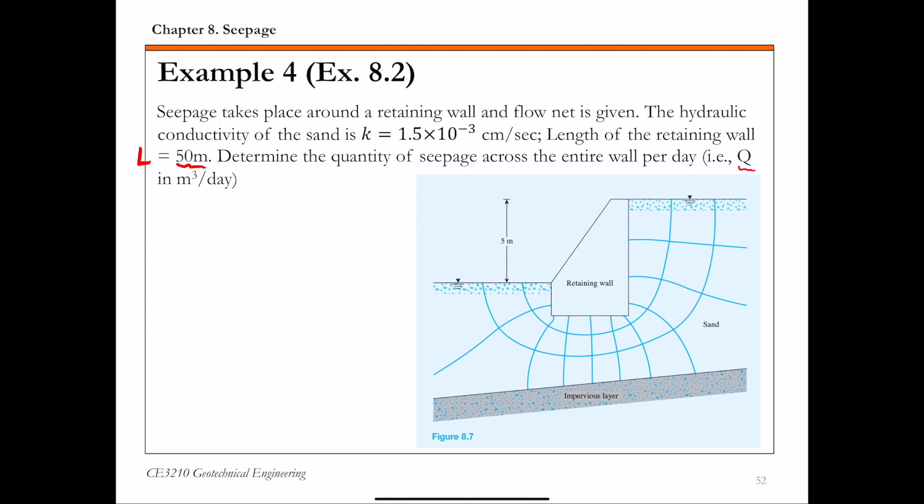In this example, the higher water table is on the right-hand side of the structure. This is your upstream water table. Water flows from high head or high energy to low head or low energy, so water flows from right to left around this retaining wall.